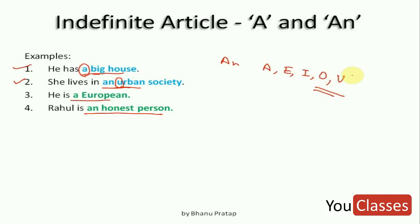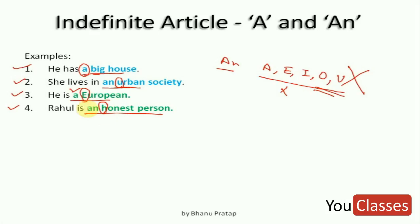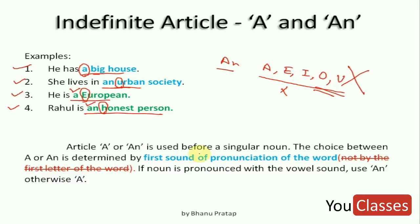We don't use 'an' before words simply when they start with a, e, i, o, u — that school teaching is totally wrong. In example three, we use 'a European' — the word starts with E, yet we use 'a'. In example four, 'Rahul is an honest person' — the word honest starts with H, yet we use 'an'. The rule is: a and an are used before singular nouns, and the choice between them is determined by the first sound of pronunciation of the word, not by the first letter.